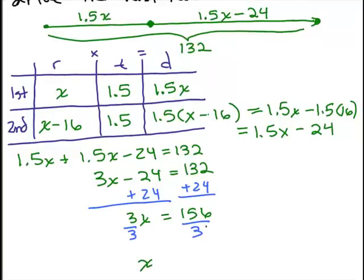So then you could do that calculation, 156 divided by 3 is going to be 52. So x is 52. Now what did x stand for? So we look back into the chart where we defined it. This is where you define it in this chart. X is 52, that's the rate the first half of the trip.